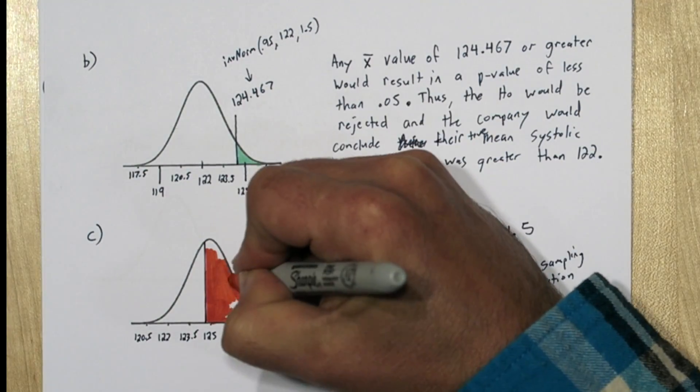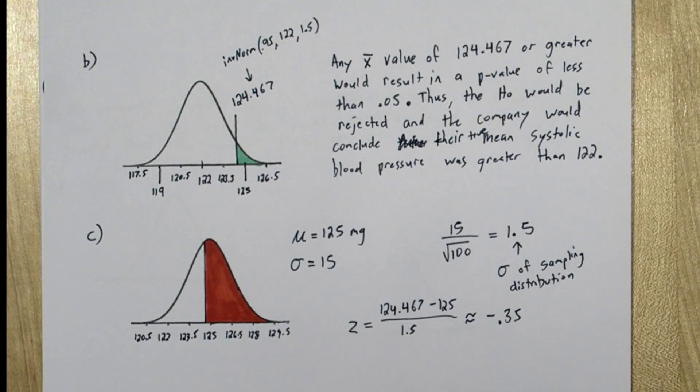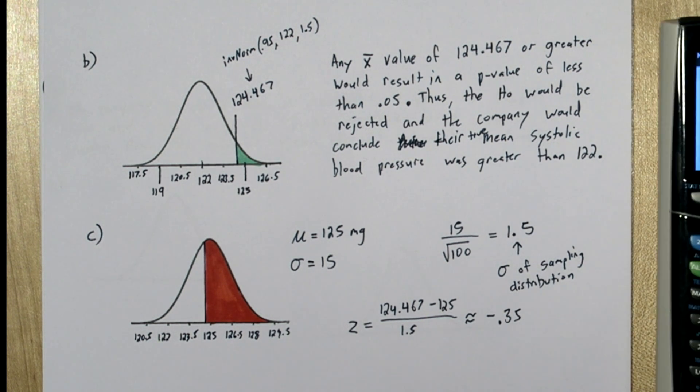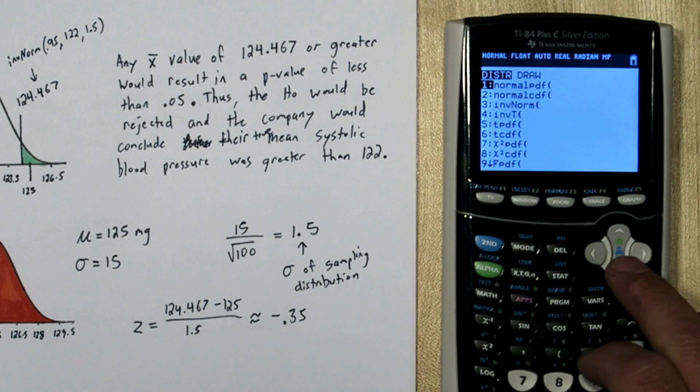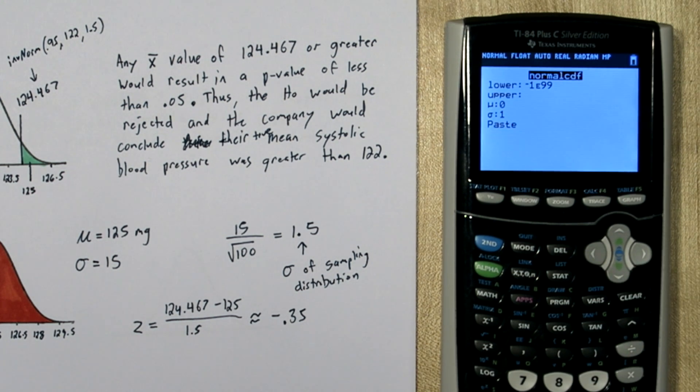So 124.467 is about 0.35 standard deviations below the mean. That's probably about here. So any x-bar up in this shaded region would result in us rejecting the mean. And remember, the area under this whole curve is 1, so we know our probability is going to be greater than 0.5 since it covers more than half. To find that actual probability, we're going to use normal CDF on the calculator. So if you press 2nd, then vars, and go to normal CDF, it says what's your lower limit? It's going to be that 124.467 we found in part B. Our upper limit, there is no upper limit, so we're just going to put a bunch of 9s there. Our mean is 125, and our standard deviation is 1.5.